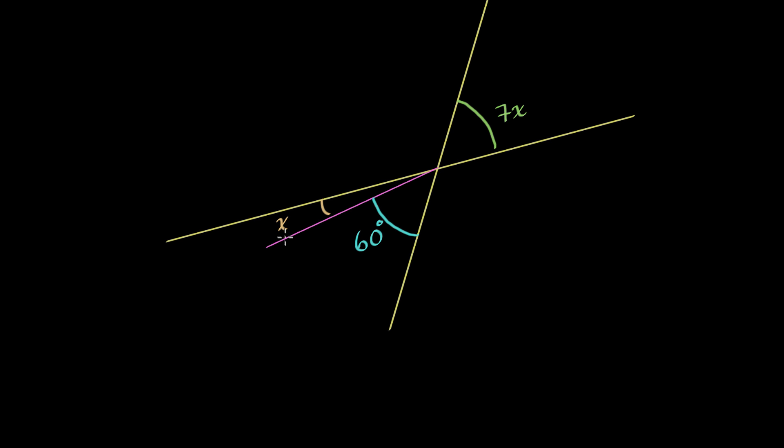So let's try to figure out what all of these angles are. To do that, we have to figure out what x is. There's a big clue here, because the 60-degree angle plus the x angle, they're adjacent. And if you add these two angles together, their outer rays are vertical angle with this 7x angle.